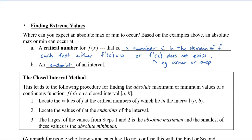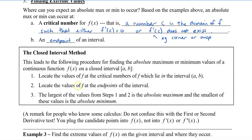The closed interval method is the procedure we should use to find the absolute maximum or minimum of a continuous function on a closed interval. First, locate the values of f at the critical numbers of f which lie in the interval from a to b. Then also locate the values of f at the endpoints of that same interval. The largest of the values from steps 1 and 2 will be the absolute max, and the smallest of these values will be the absolute minimum. Note: do not confuse this with a first or second derivative test — you're going to plug the candidate points into f of x, not into the first or second derivative.